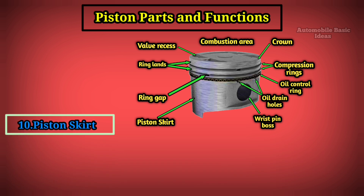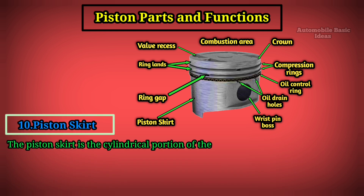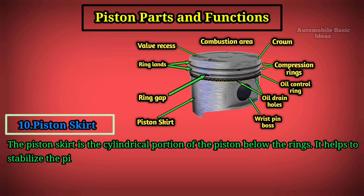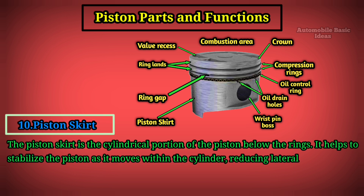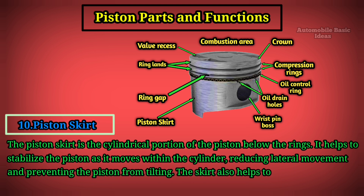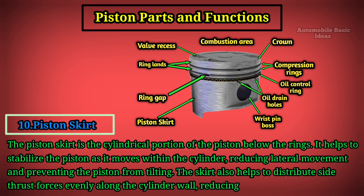Piston Skirt: The piston skirt is the cylindrical portion of the piston below the rings. It helps to stabilize the piston as it moves within the cylinder, reducing lateral movement and preventing the piston from tilting. The skirt also helps to distribute side thrust forces evenly along the cylinder wall, reducing wear and tear.